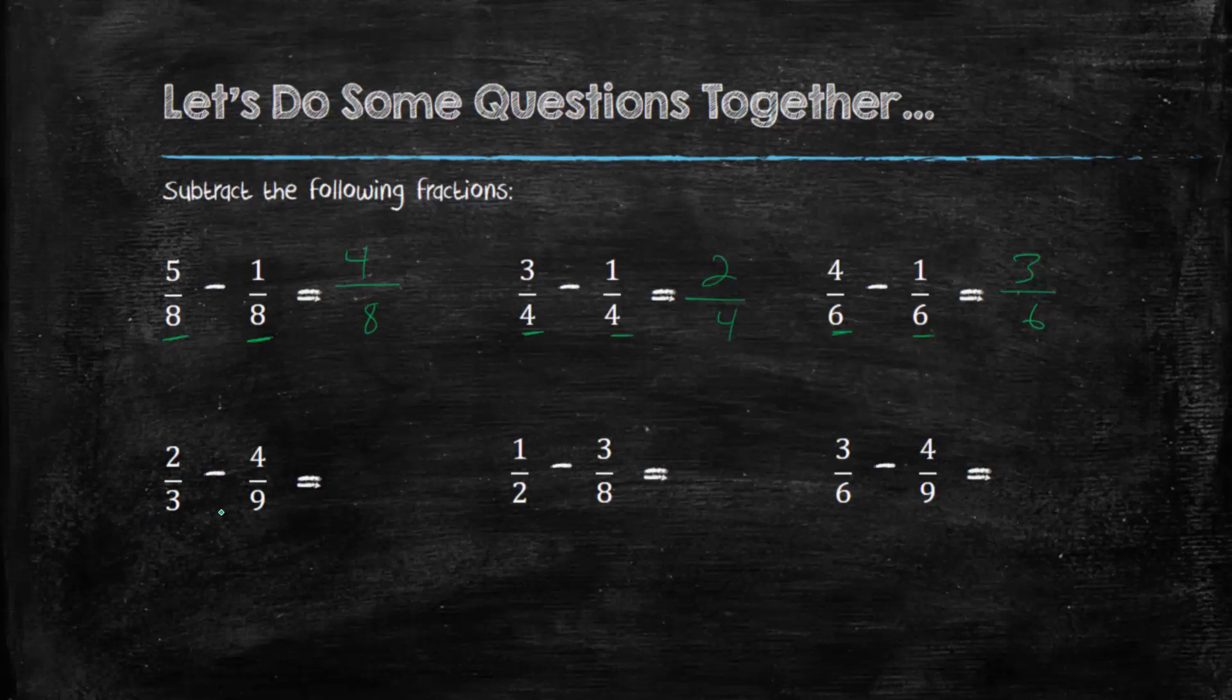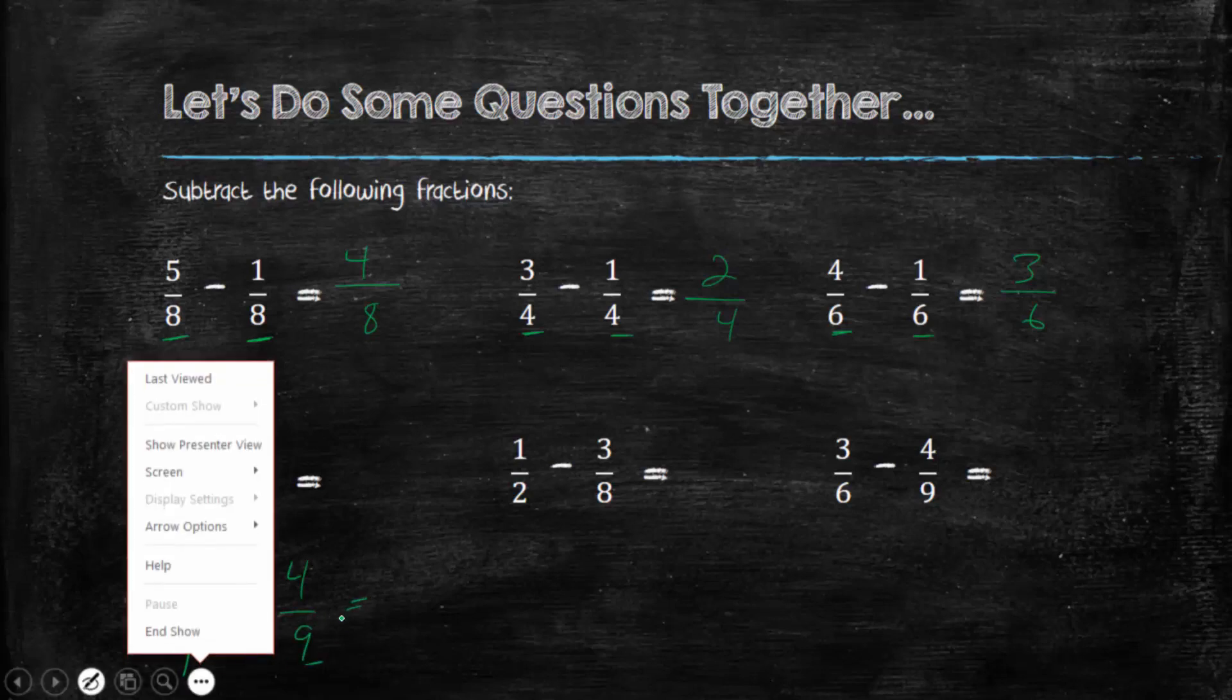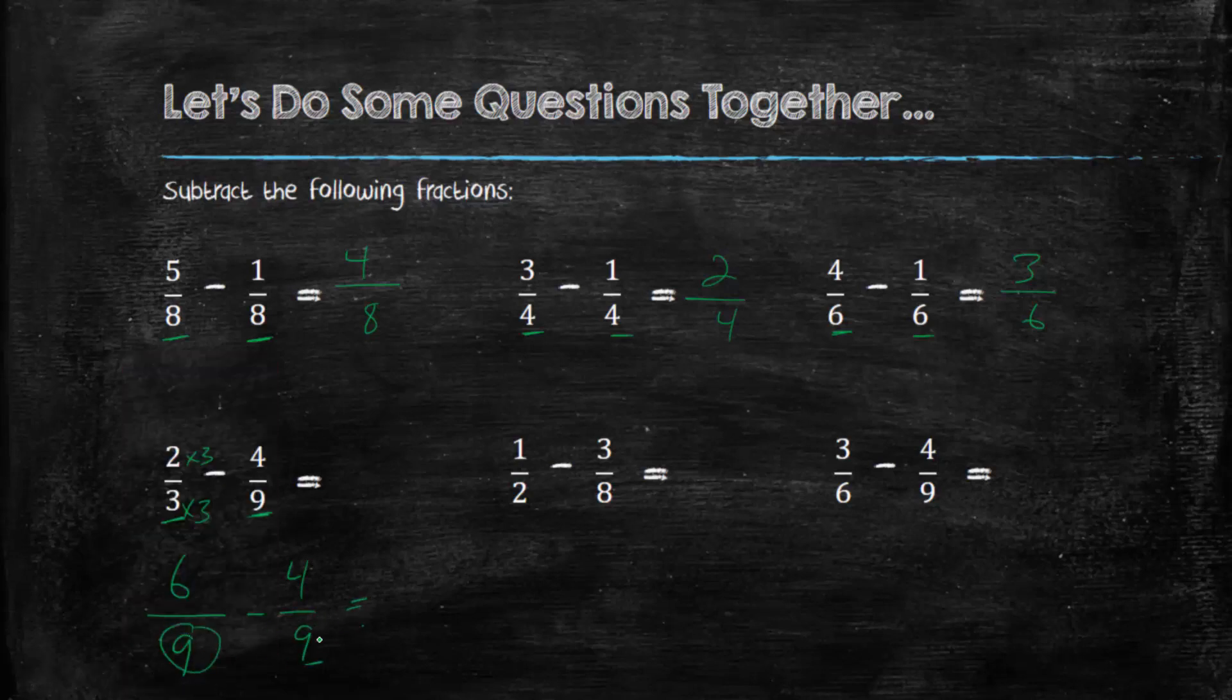Okay. Let's look at this here. Here we've got fractions that don't have the same denominator. So we need to make them the same denominator. Well, we could do this by multiplying this fraction by 3. So 2 times 3 is 6. 3 times 3 is 9. And then we drop this fraction as is, 4 over 9. Now that we have the same denominator, we could subtract the numerators. 6 minus 4 is 2 over 9.